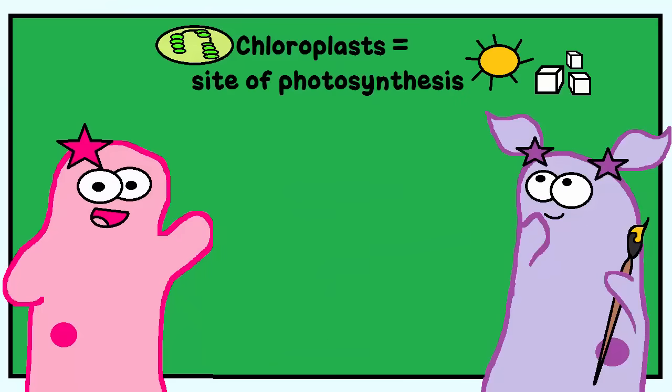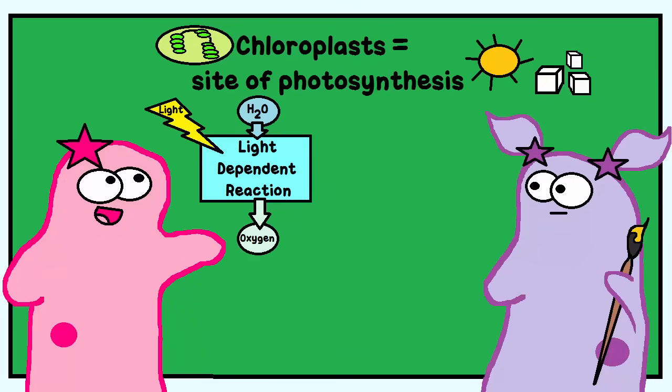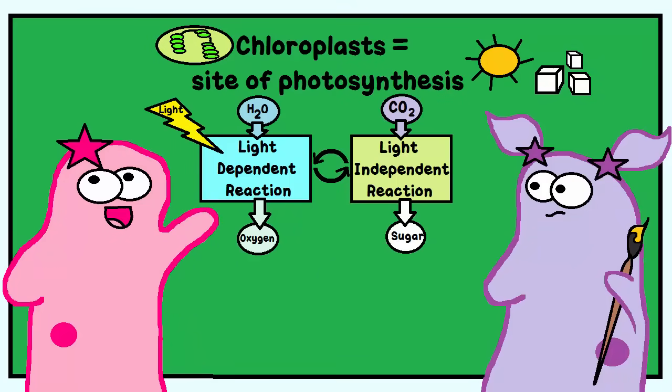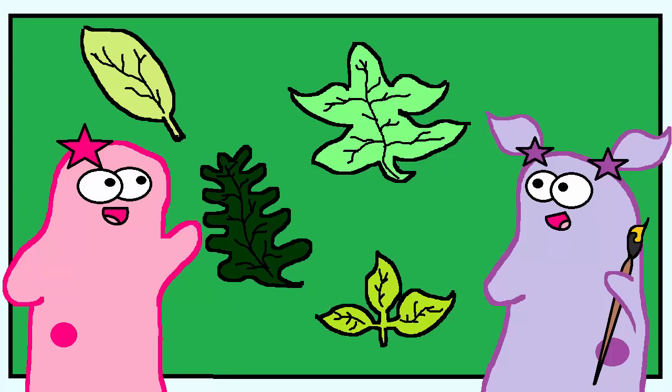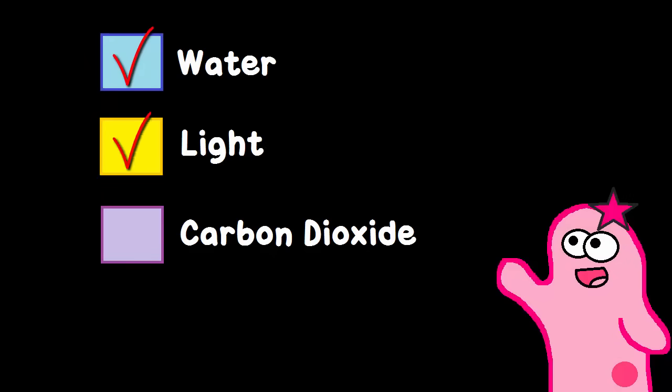This is a complicated process that is made up of a light-dependent reaction and a light-independent reaction, also called the Calvin Cycle. It's a big enough process that we'll have to have another video clip to cover that. But the leaf structure is designed to capture this light energy with their chloroplasts. The other reactant on our photosynthesis checklist is carbon dioxide.